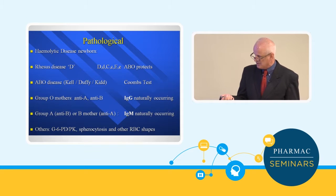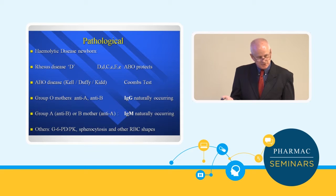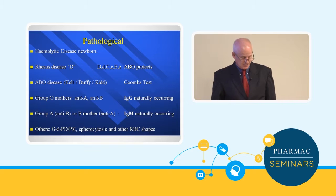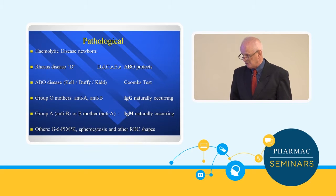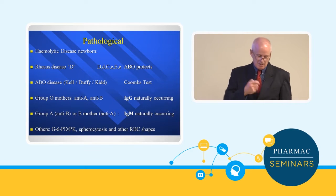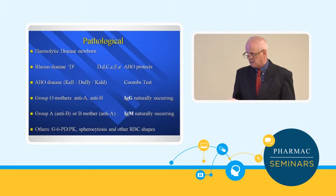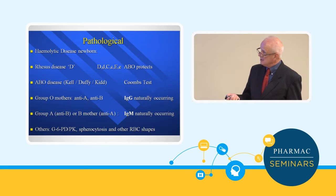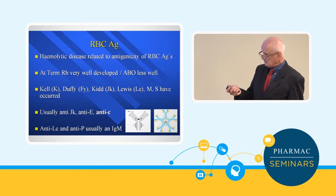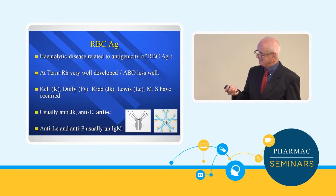Jaundice can occur for other reasons including enzyme deficiencies, which cause red blood cells to not last as long, and red cell abnormalities such as spherocytosis and elliptocytosis. These conditions make red cells break down faster, producing higher bilirubin turnover. The liver can't manage the increased load, and bilirubin goes sky-high.